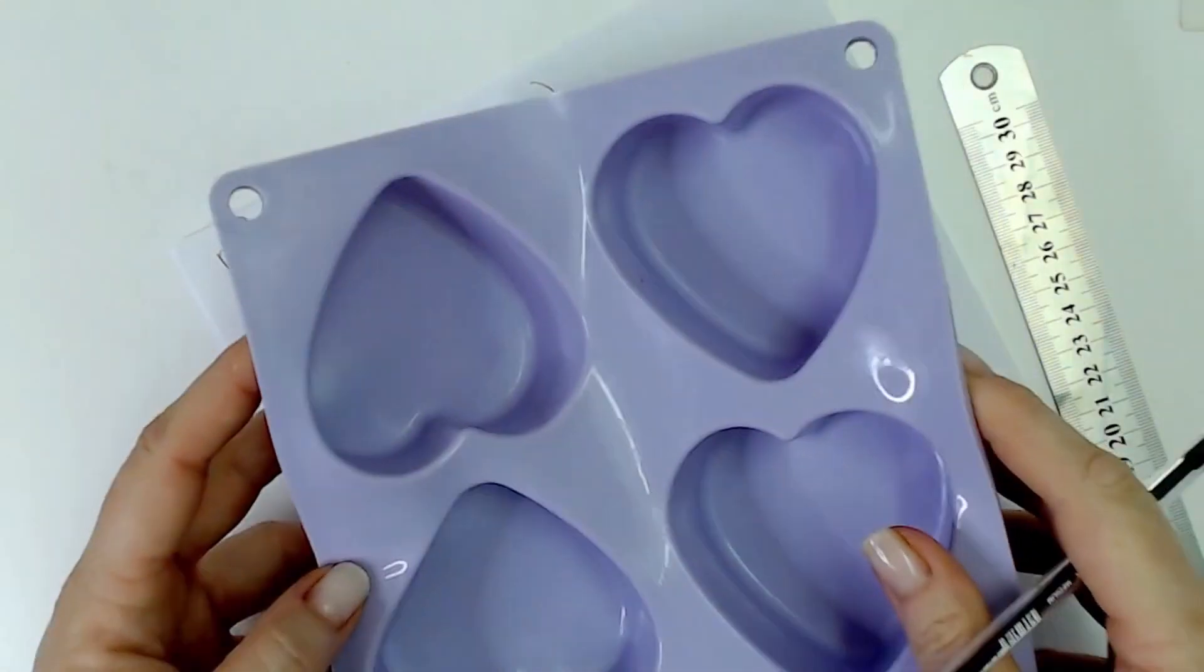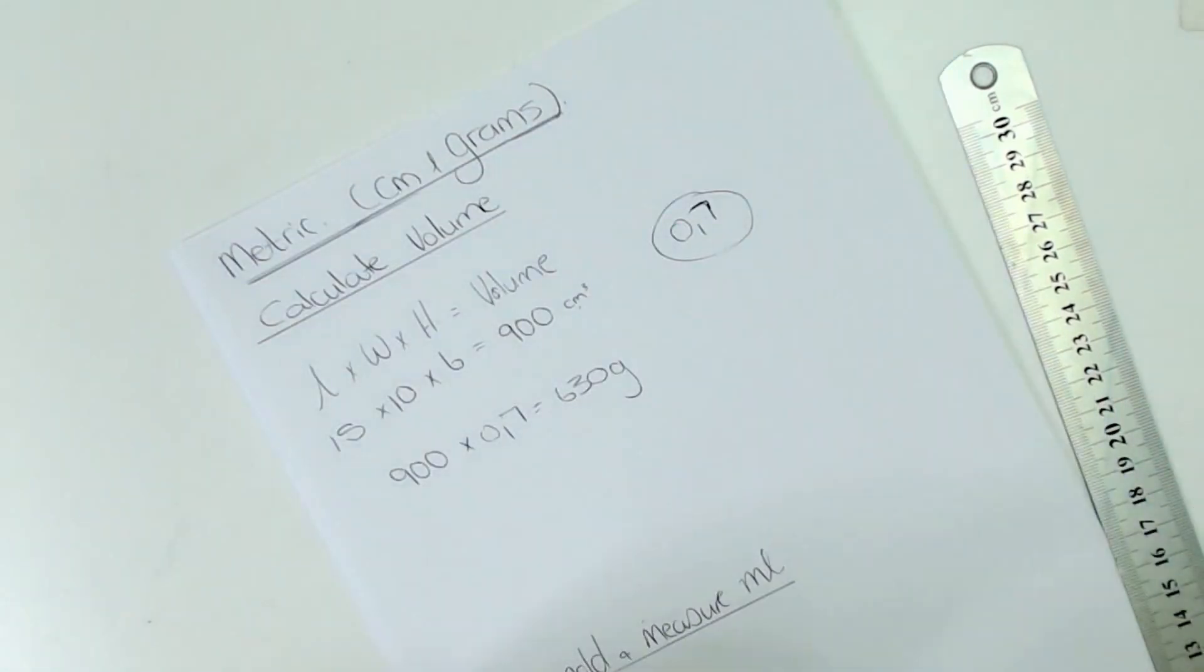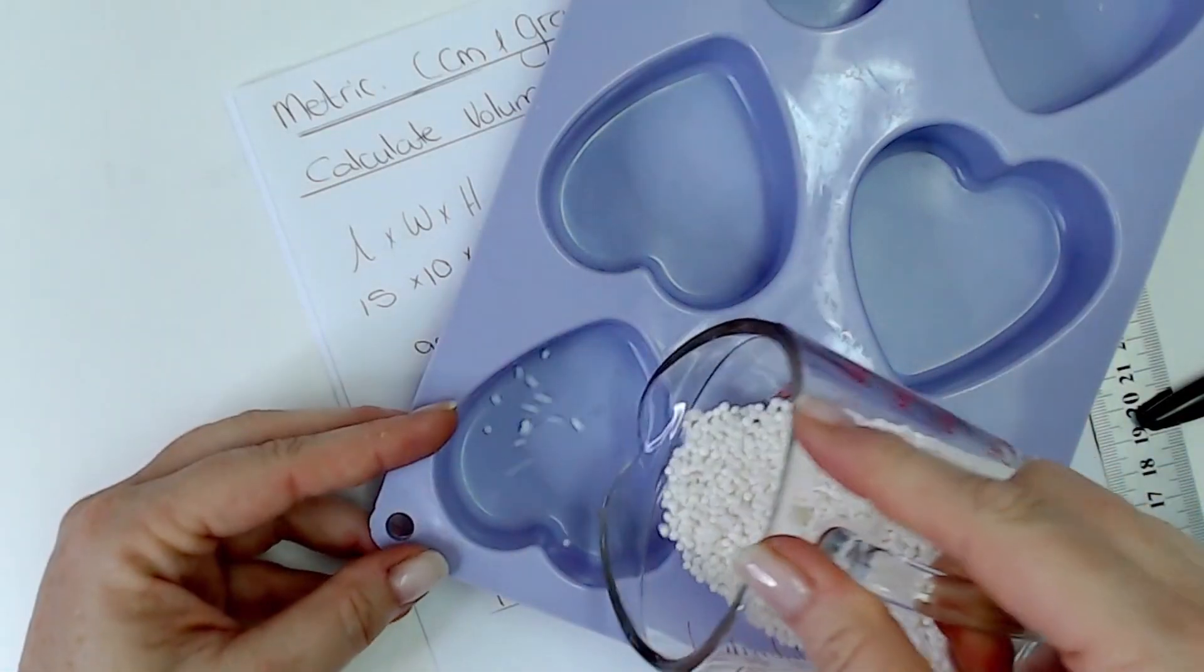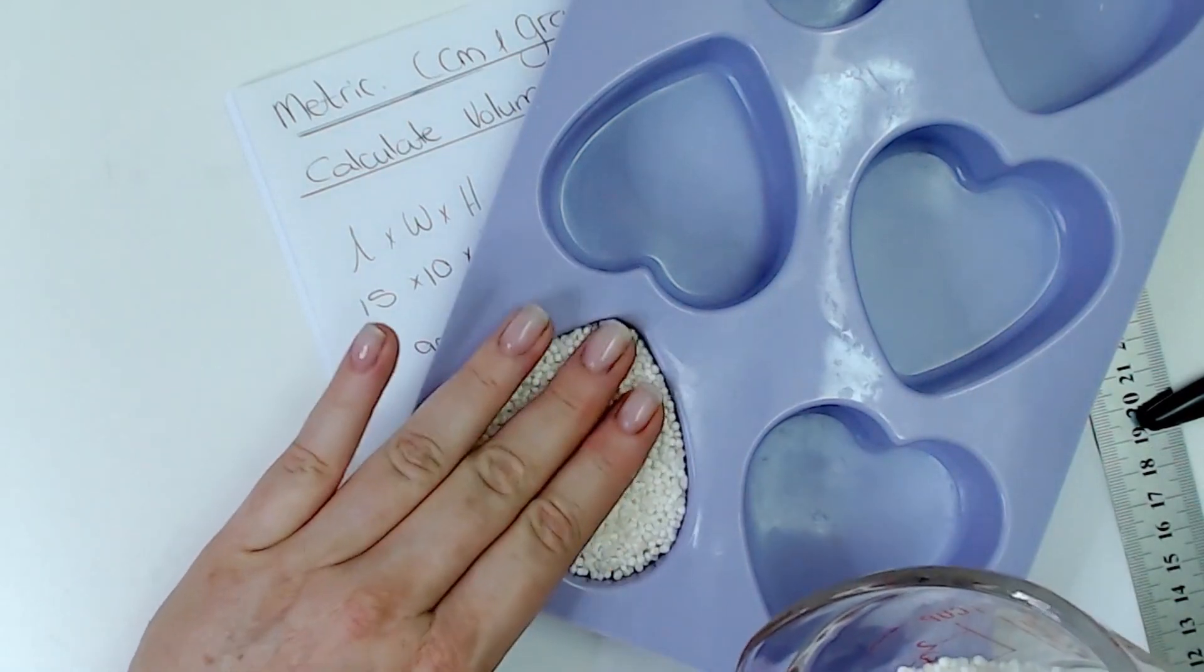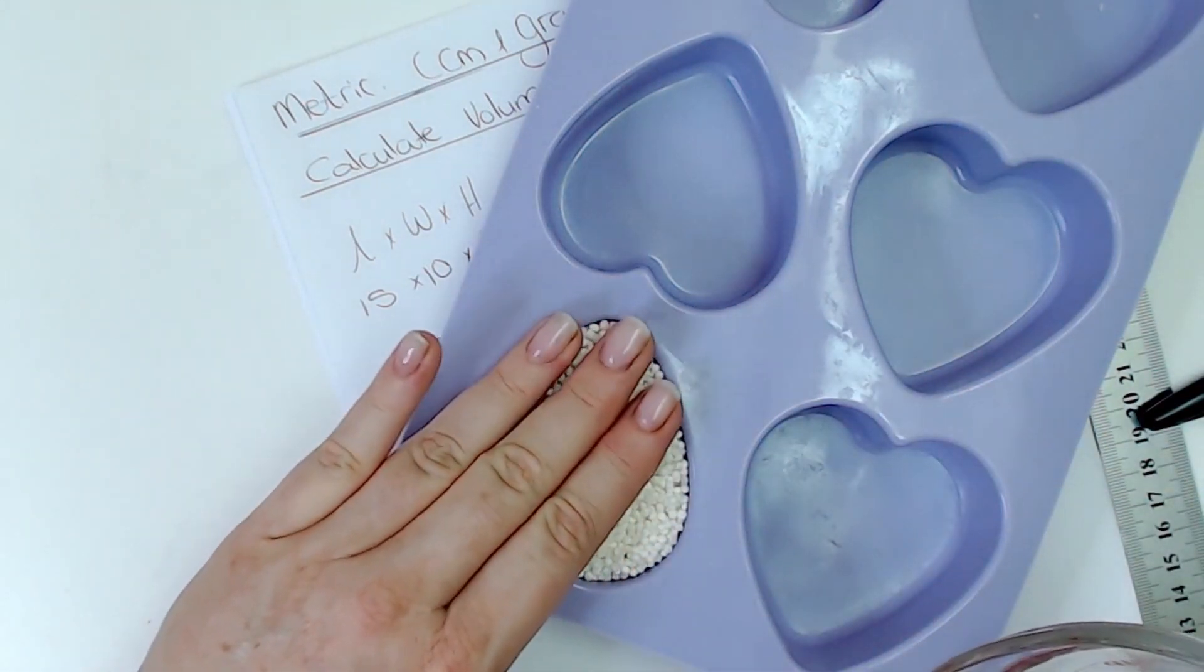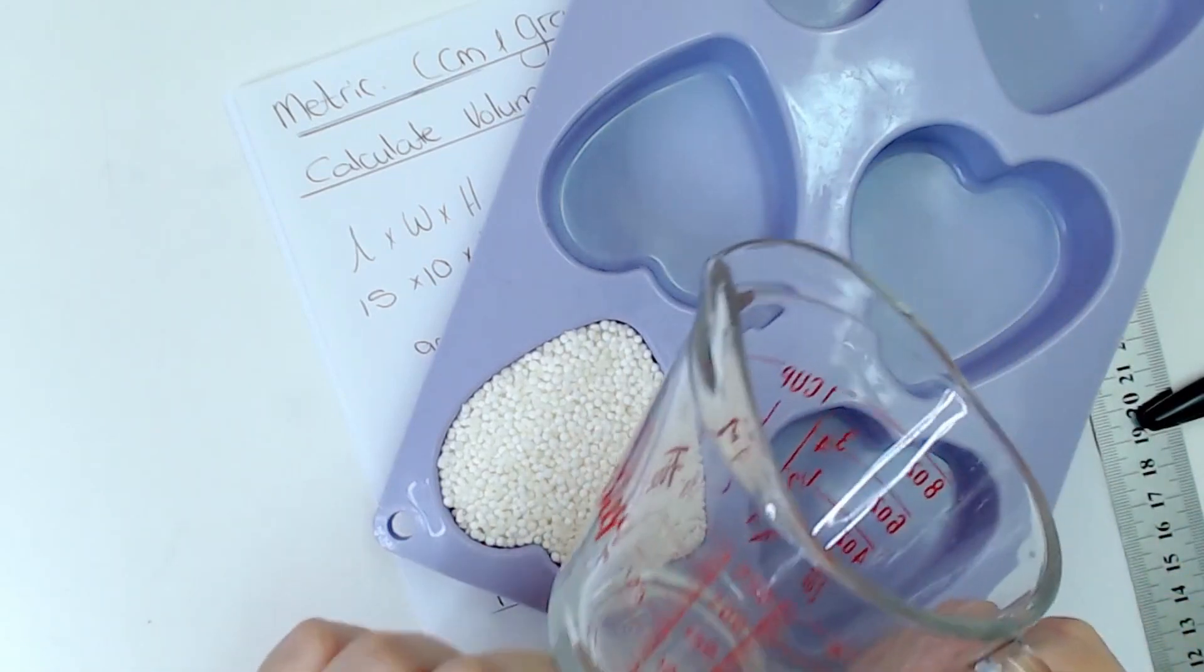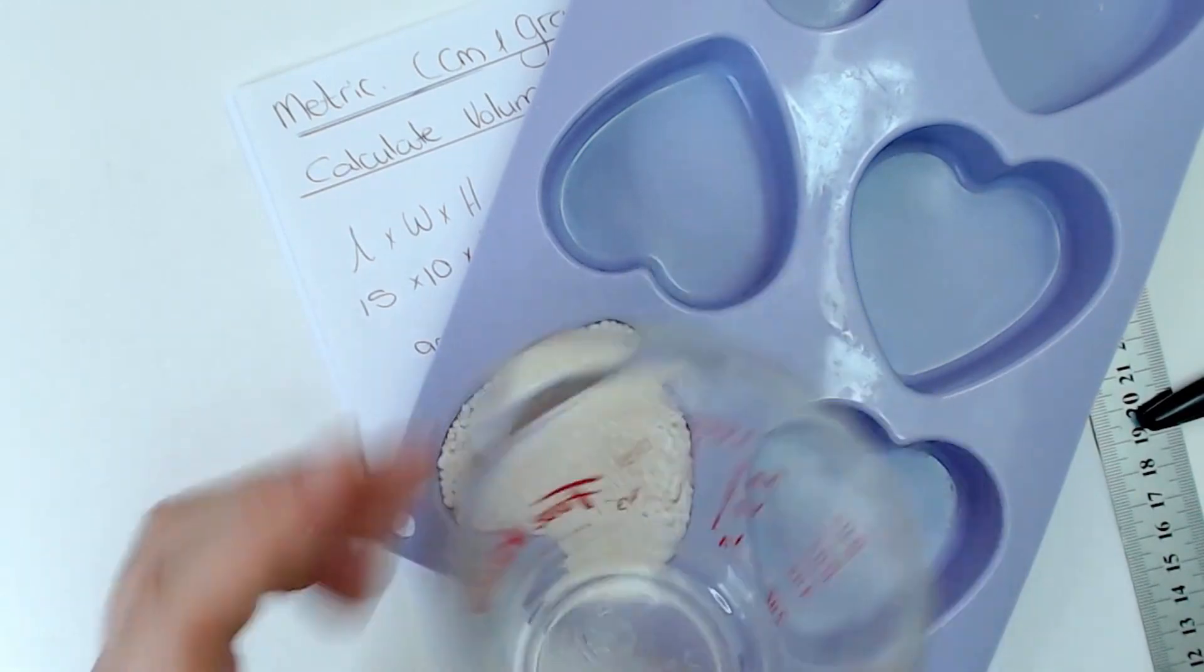Now when we get to irregular shapes that's not square that you can't measure or it's not rectangular, another easy way that you can do this is the second way. You're going to take rice, water, anything that you can fill your mold with to the level that you would like to fill your soap batter. Now for me I like to fill it to the tippy top and I pre-measured this. So now I've filled my measuring cup, I'm going to pour it back in here and I'm going to take the milliliter reading on the cup and then I'm going to work from there.